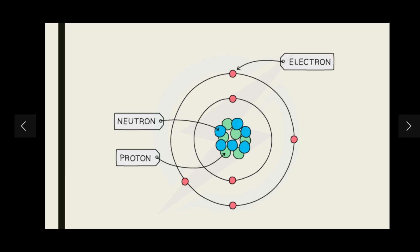An important exam tip: an atom always has zero overall charge. This is because the number of protons is always cancelled out by the same number of electrons — both equal the atomic number. If there were an imbalance between protons and electrons, the atom would become charged, and at that point it would no longer be called an atom — instead it would be called an ion, which we will cover in upcoming videos.